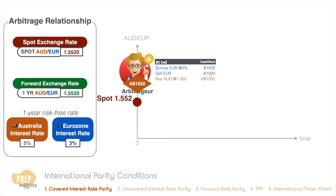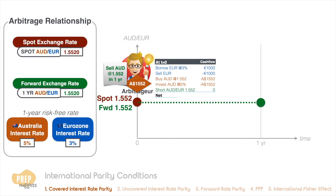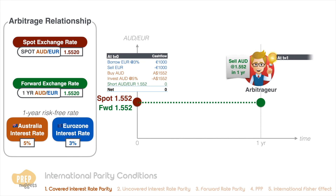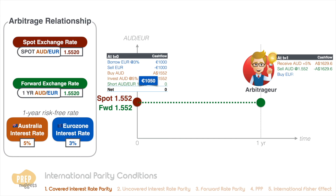He invests the AUD at the risk-free rate of five percent for a year, and at the same time he enters into a currency forward to sell AUD at the forward rate of 1.552. After one year, he would have 1629.6 AUD including interest. As he has the forward contract, he can sell the AUD at the 1.552 rate, which means he exchanges all the AUD for 1050 euros. He repays his loan with interest and pockets 20 euros.